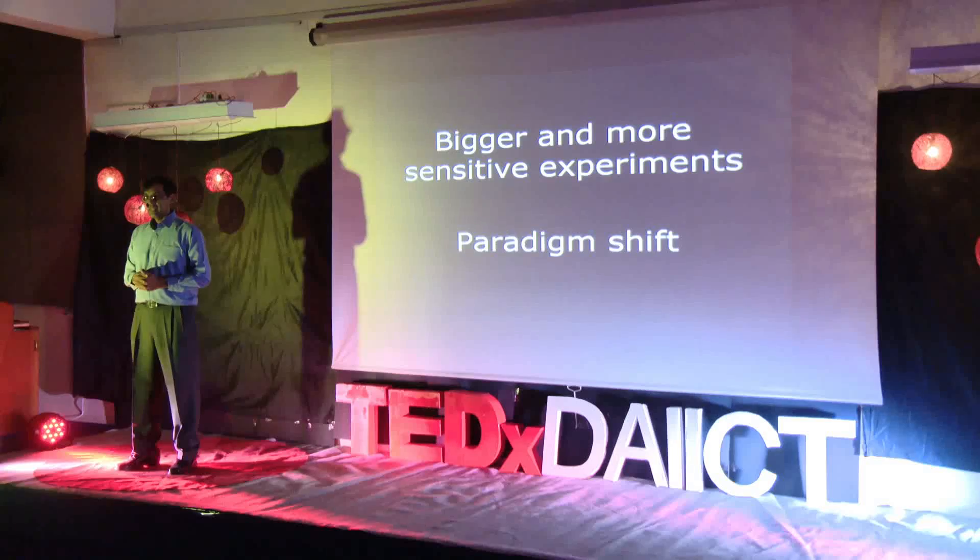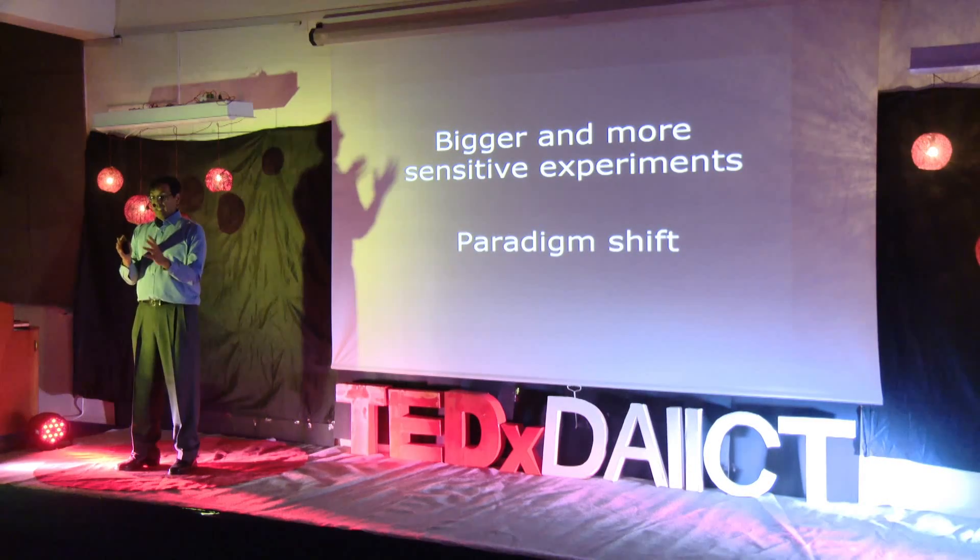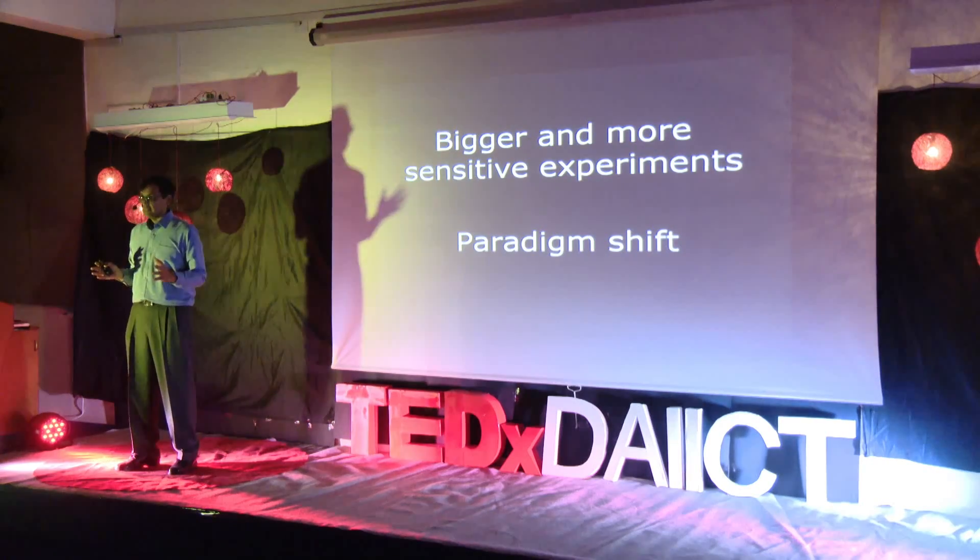So where do we go from here? We are building bigger and more sensitive experiments to try and detect the dark matter, and we hope that in the next 10 or 20 years we will finally be able to say we have discovered the dark matter particle. However, if in the next 20 years we do not find it, then it will require a major paradigm shift in our understanding. The hope will be that some new innovative theory or idea will indicate new avenues to explore, and finally we will discover the elusive dark matter. Thank you.